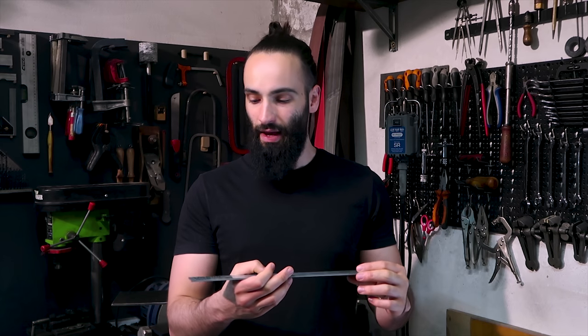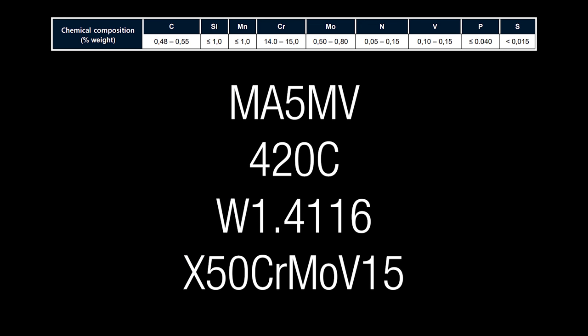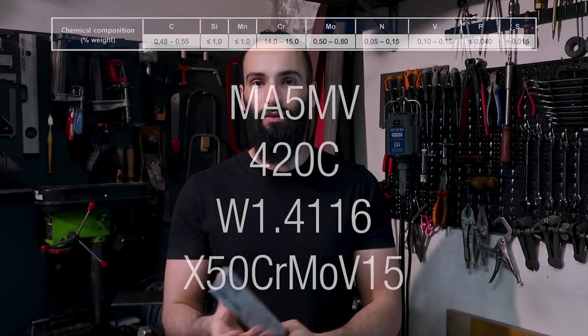Stainless steel has a much more specific heat treating process compared to plain high carbon steel, and there are many kinds of stainless steel. They all have somewhat different heat treating processes. The one I have here is called M4 MA5MV, but it also has many other names depending on the manufacturer and nomenclature. The composition is pretty much the same, so the process I'm about to show you will be the same for all these kinds of steel. From the datasheet, I know it can be water, air, oil, and plate quenching.